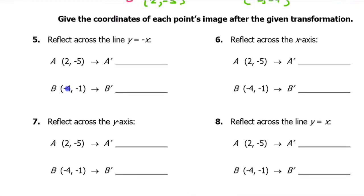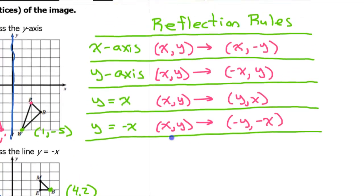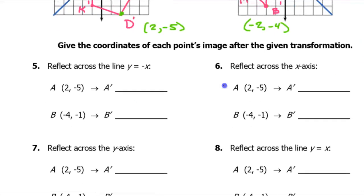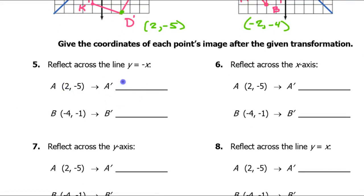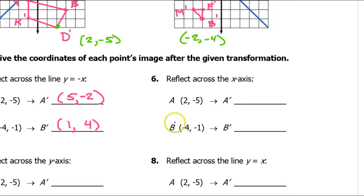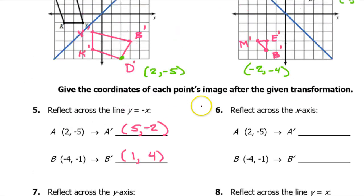Now let's use those rules. For a reflection over the line y equals negative x, the coordinates switch places and change signs. So if we have (5, 2), the five and two switch, then both change signs, giving (−2, −5). If we have (−1, −4), they switch places to (−4, −1) and change signs, both going from negative to positive, giving (4, 1).